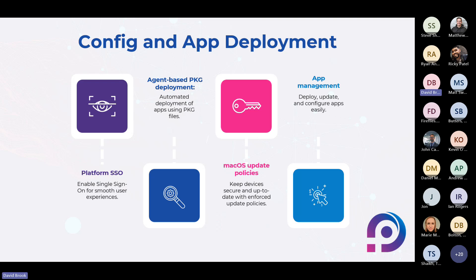For macOS update policies, you have generic update policies and also declarative device management (DDM) update policies. With DDM, similar to desired state configuration in Windows, you specify when you want a device to be on a certain version and DDM will make that happen.